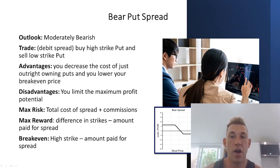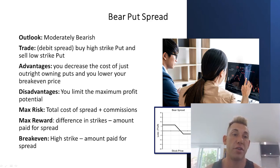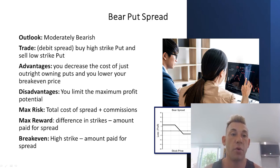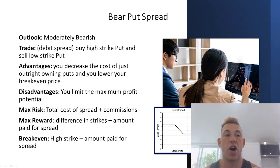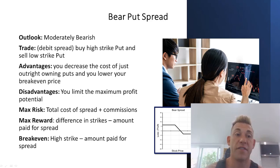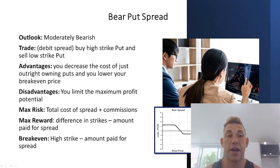If you are extremely bearish, you're just going to buy puts outright. You're not going to look to buy spreads. But the trade is to buy a higher strike put and to sell a lower strike put. The advantage is cost is lower — you're taking away some of the implied volatility risk of owning puts and you're getting some of that cost basis.